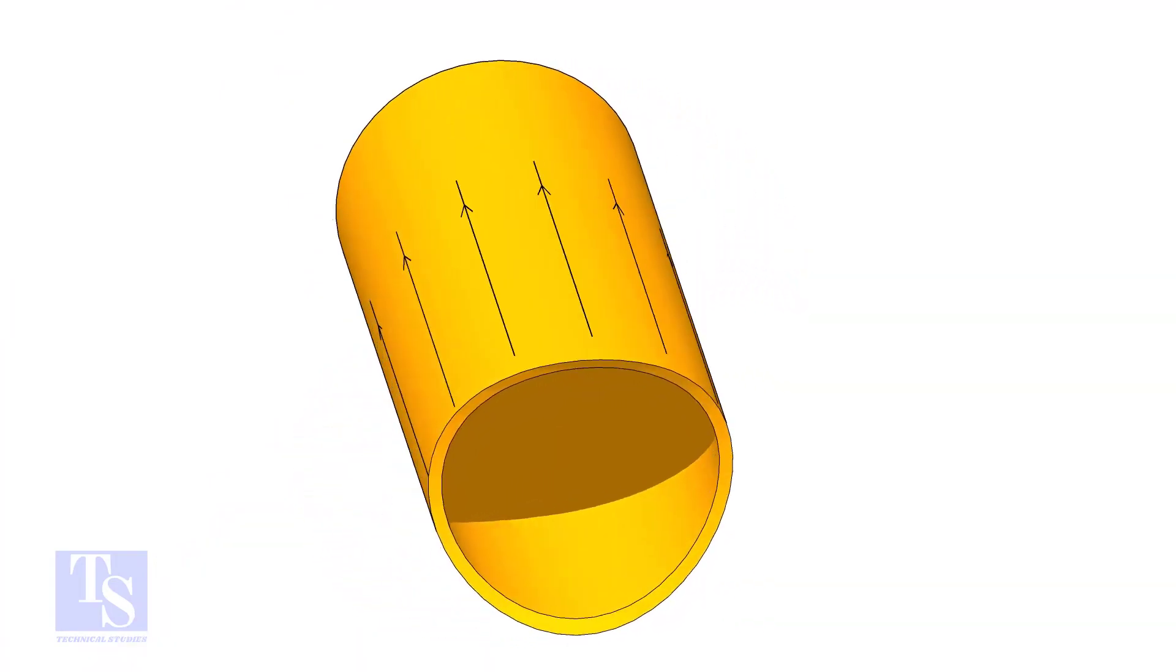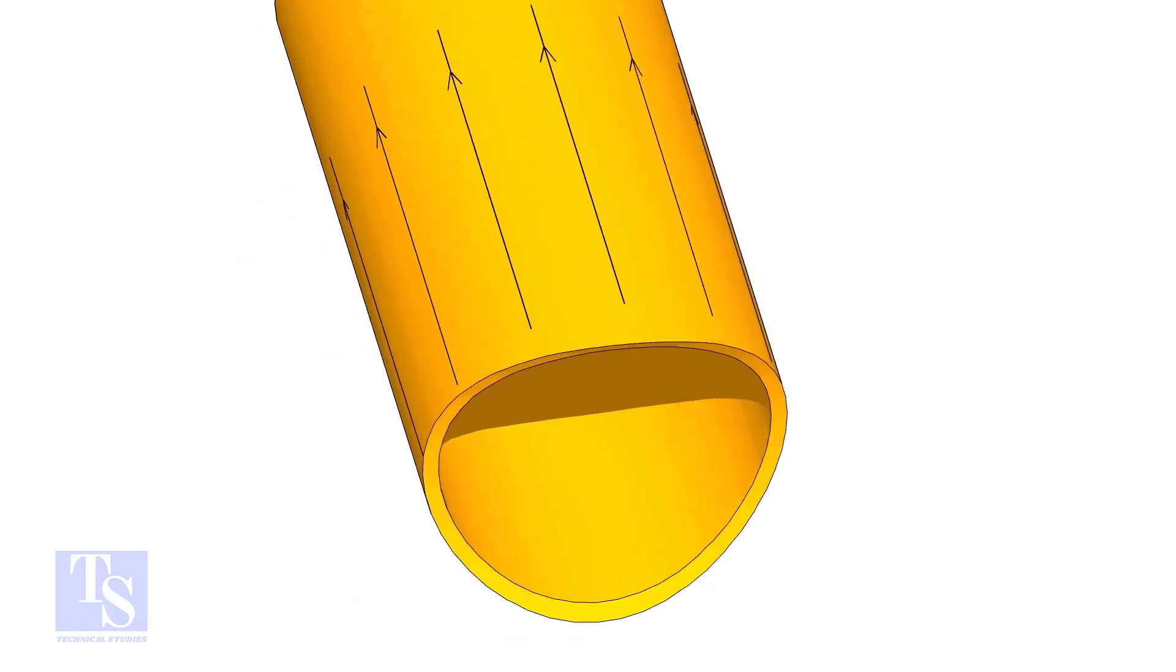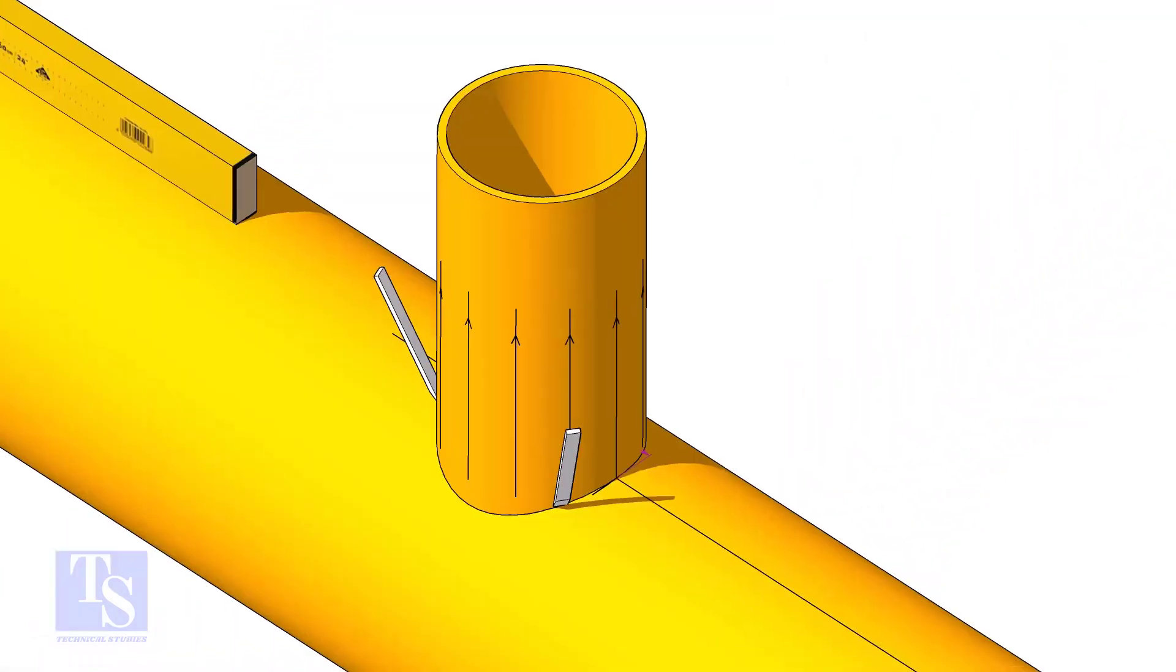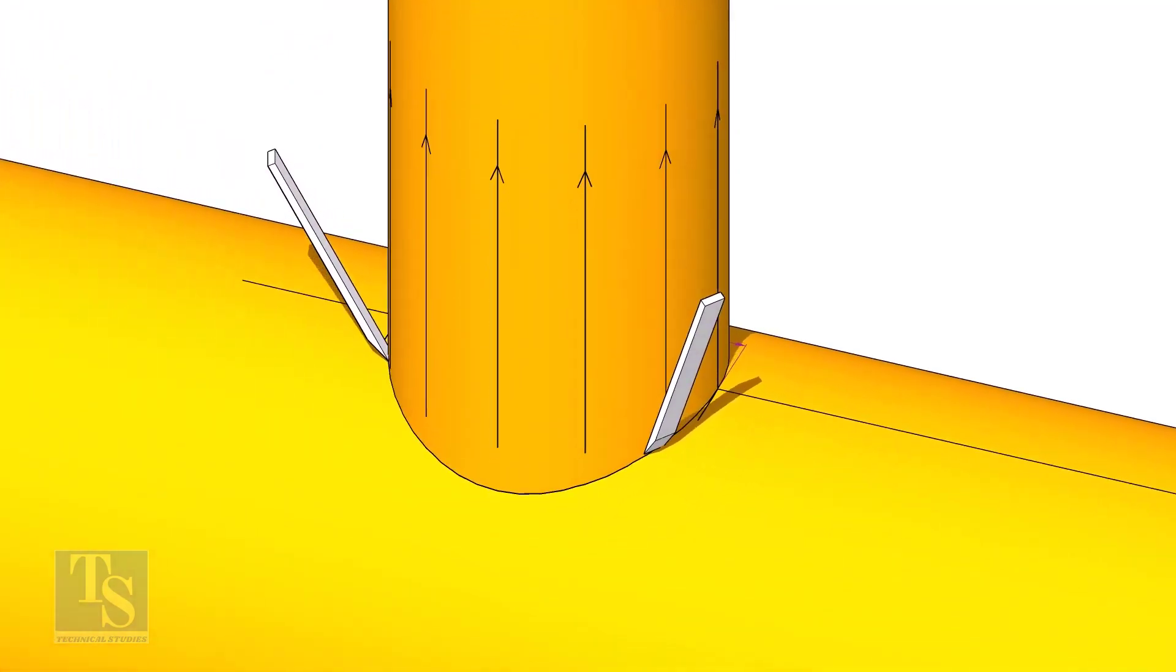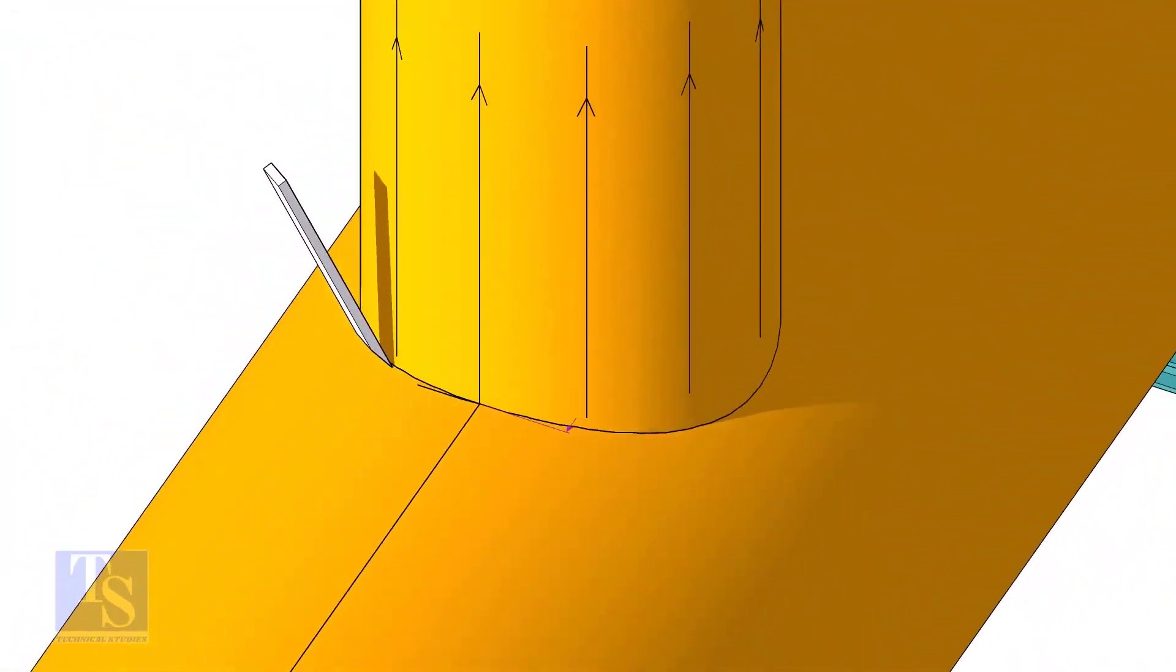After cutting and grinding the notch on the branch pipe, put it on the header. Make sure it is exactly in its position and mark the opening on the header as shown.